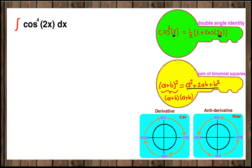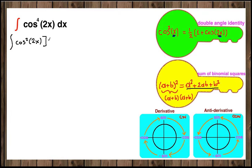Hi everybody. In this video we are going to integrate cosine to the 4th of 2x. The major key you need to know is the double angle identity. Our plan is to break cosine 4th into cosine squared form to be able to utilize the double angle identity. So cosine squared of 2x, the quantity squared, will be equal to cosine 4th.